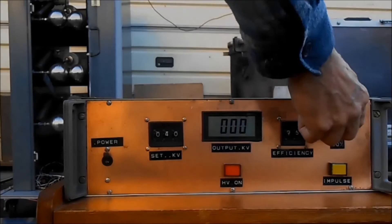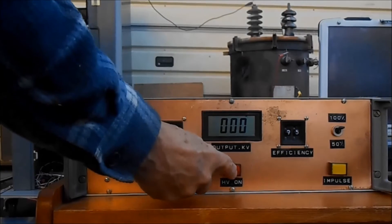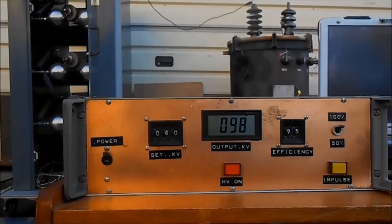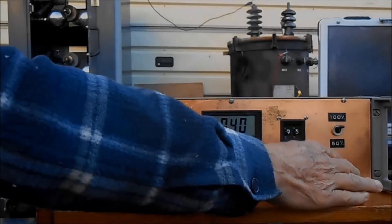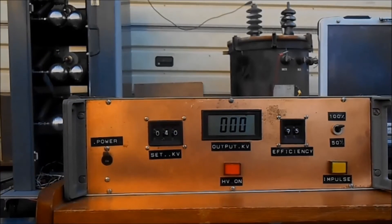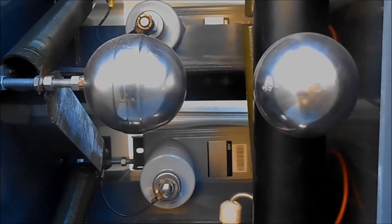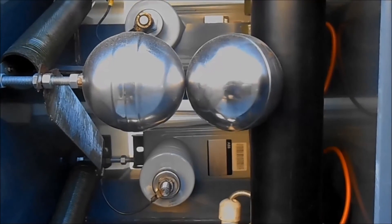We will set up the system for 100% full wave. We press the high voltage on. It will show 40 kV will be the impulse and we could see the arc over between the spheres.